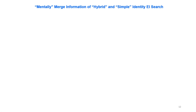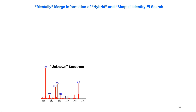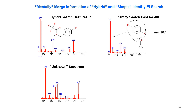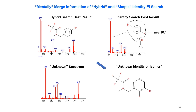Let's mentally merge the information from the hybrid and simple identity EI searches. From the hybrid search, the best result is a known compound; from the identity search results we know it has a benzyl group with a bromine and a fluorine. Putting them together yields the proposed structure for our unknown identity, though it could be an isomer. This was actually a purchased compound not yet in the current databases — it was being added by NIST — so I used it as a test case.